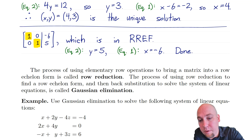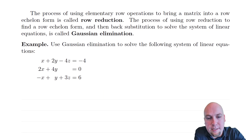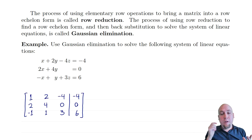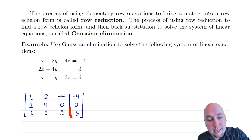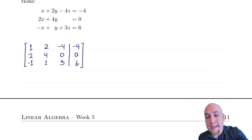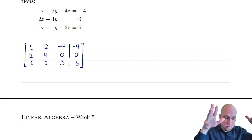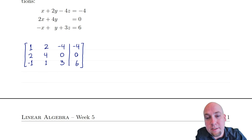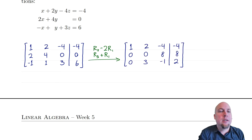Our approach to solving linear systems is: do row operations to get into row echelon form, then solve via back substitution — called Gaussian elimination — or do row operations all the way to reduced row echelon form and read off the solution directly. Let's go through Gaussian elimination on a three-by-three example. We represent the system as an augmented matrix, then do row two minus two times row one and row three plus row one to zero out the bottom-left entries.